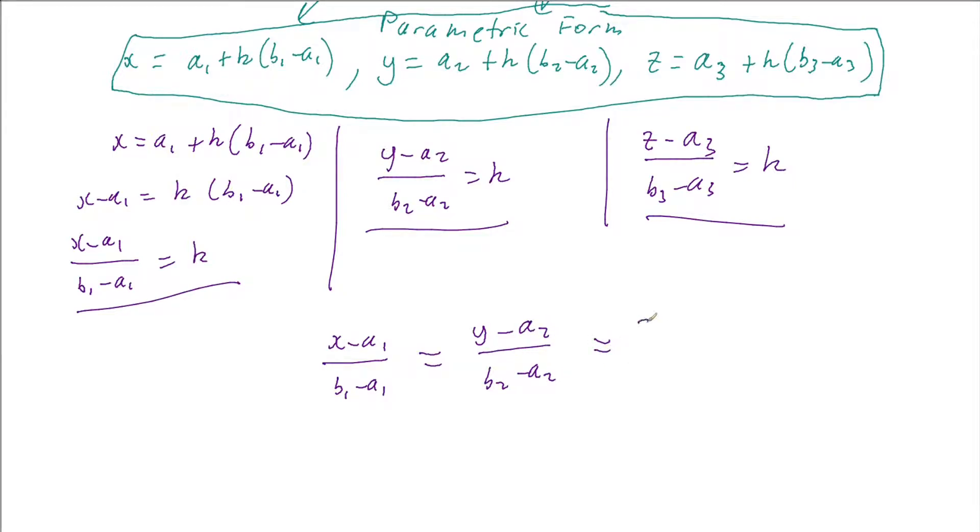It means that these three statements here are equal. It means that x minus A1 over B1 minus A1 is the same as y minus A2 over B2 minus A2, and is the same as z minus A3 over B3 minus A3. And this is what gives us our Cartesian form or our Cartesian equation for our 3D line.